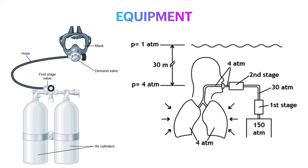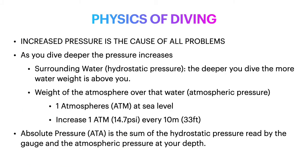The basics of scuba equipment: you have a tank and a two-valve system. The first valve takes the pressure from the tank — usually around 150 atm — down to about 30 atm. The second valve regulates what atm you're breathing at, maintaining the atmospheric pressure of your dive depth. Increased pressure while diving is the cause of all medical problems in divers.